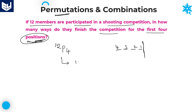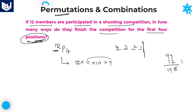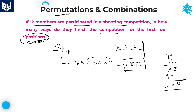How can you calculate 12P4? Starting from 12, write four numbers in decreasing order: 12 into 11 into 10 into 9. Calculating the product: 11 into 9 is 99, and 99 into 12 gives 1188, then multiplied by 10 gives 11880. So 12P4, which is 12 into 11 into 10 into 9, equals 11880. That is the answer for this question. In this way you can solve problems related to positions.